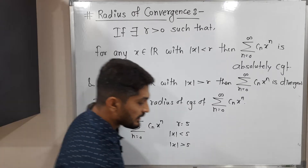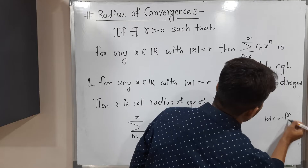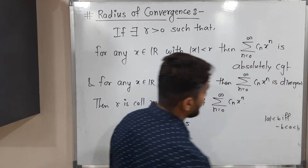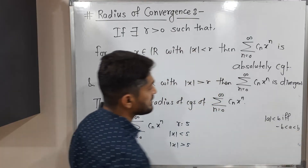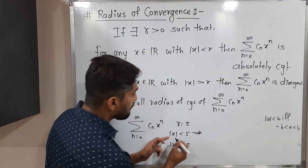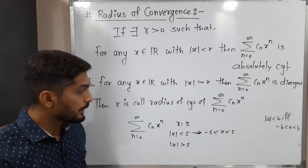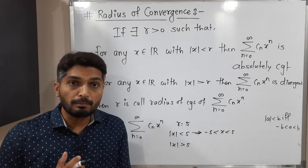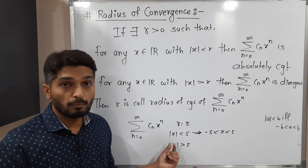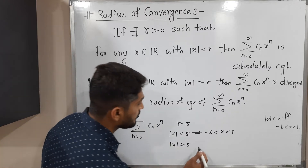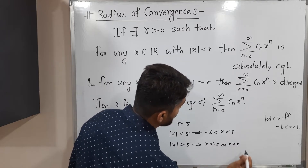We are familiar with one result: |a| less than b if and only if minus b less than a less than b. Applying that result here: |x| less than 5 means minus 5 less than x less than 5. So if x lies between minus 5 and 5, the series is convergent. And if |x| is greater than 5, that means either x is less than minus 5 or x is greater than 5.